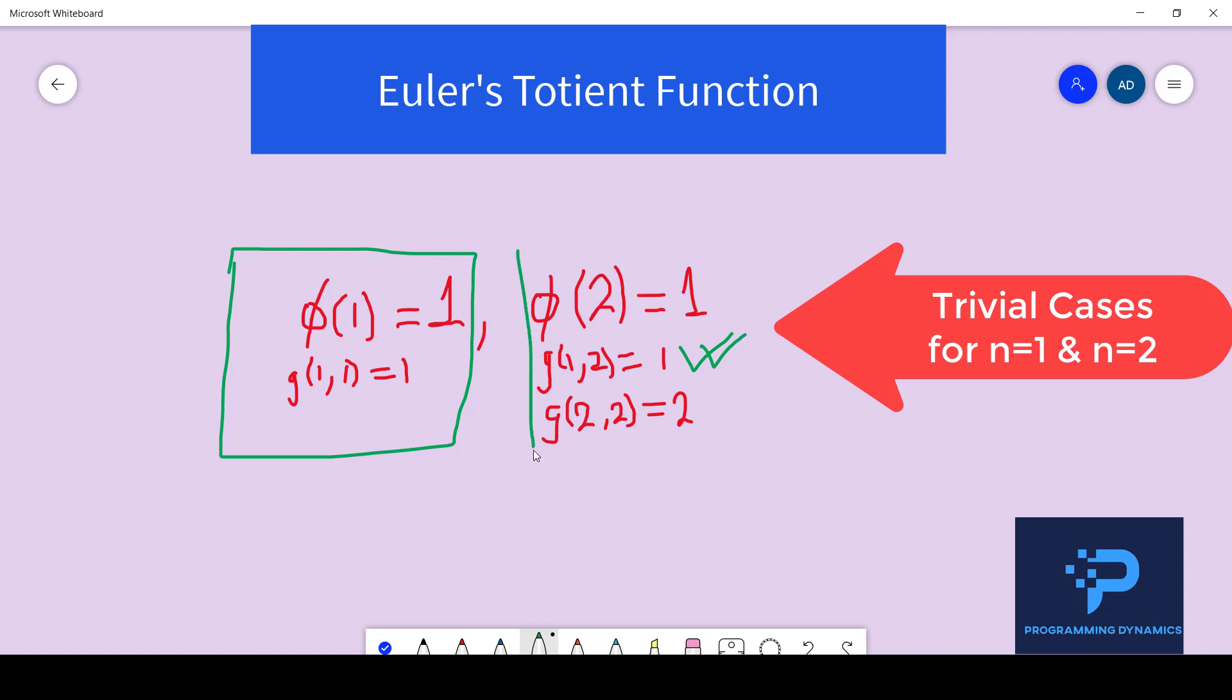Let's take another case for n equal to 2. So Phi of 2 is equal to 1. So there exists two numbers between 1 and n that is 1 and 2. So if we take the GCD of each of those numbers with n then we get GCD of 1 comma 2 is 1 and GCD of 2 comma 2 is 2. So there exists only one number which is co-prime with n. So therefore Phi of 2 is equal to 1.